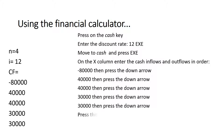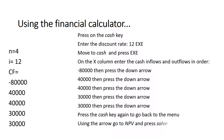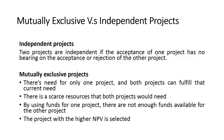Press the cash key again to go back to the menu, navigate to NPV, press solve, and you will get the answer of $28,020.9906 — the same result as before. Using any capital budgeting decision model, we may not only consider one project; we might use it to compare between different projects.